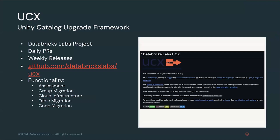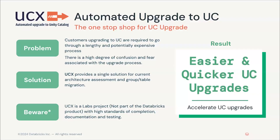The UCX tool provides functionalities that help on different areas or tasks of the migration process, covering everything from the initial assessment of your current architecture to the creation of cloud objects and the migration of tables. Why was UCX created? We had a lot of customers migrating to Unity Catalog, and this was a highly confusing and slow process for them, since there weren't really any straightforward tools or guides to follow.